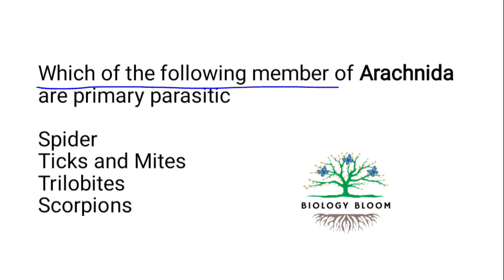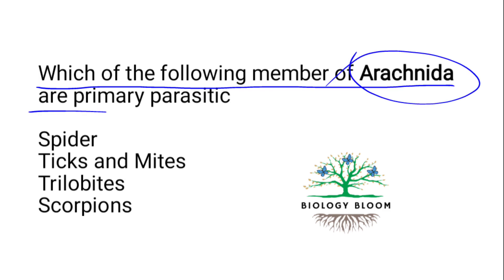Which members of Arachnida are primarily parasitic? Arachnida is a group of arthropods that includes spiders, ticks, mites, trilobites, and scorpions. Among these, we need to identify which members are parasitic and cause harm to other living organisms, humans, and animals.